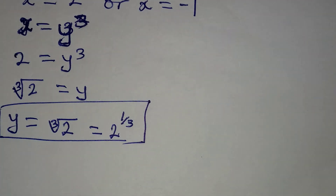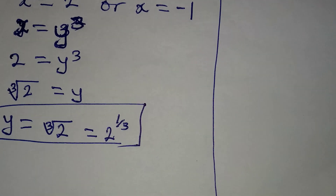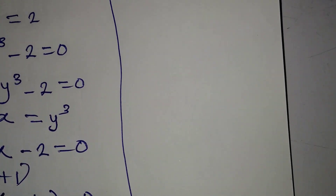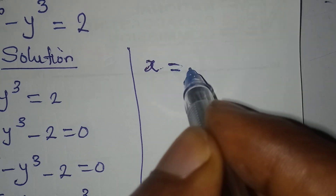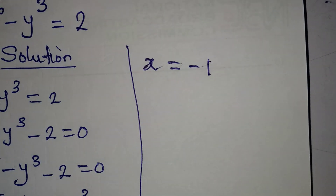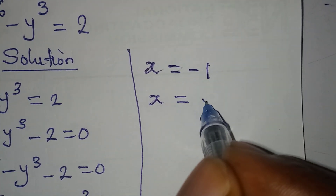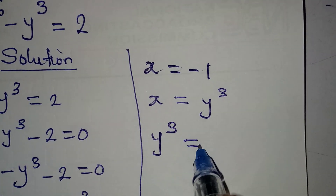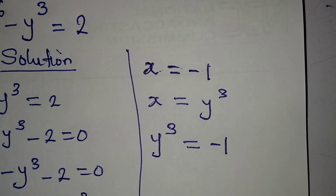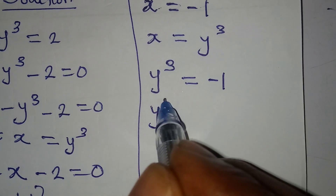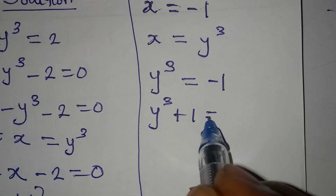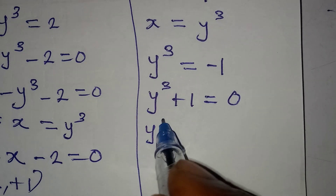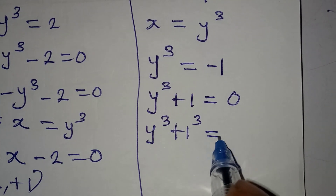For the other solution, we pick x equal to minus 1. Since x equals y to the power of 3, that means y to the power of 3 equals minus 1. So y to the power of 3 plus 1 equals 0. And do not forget that this is the same as y to the power of 3 plus 1 to the power of 3 equals 0.